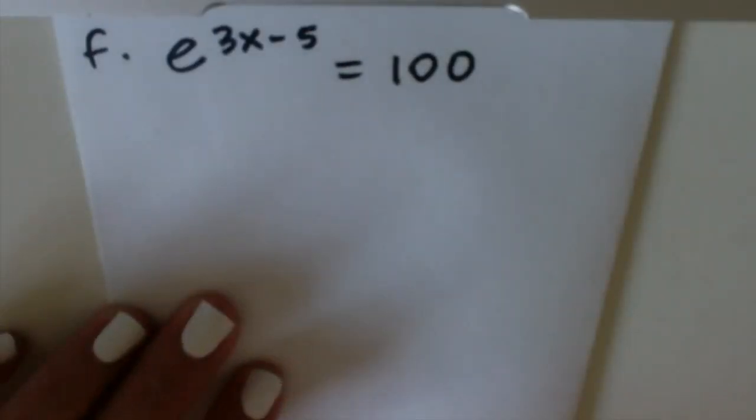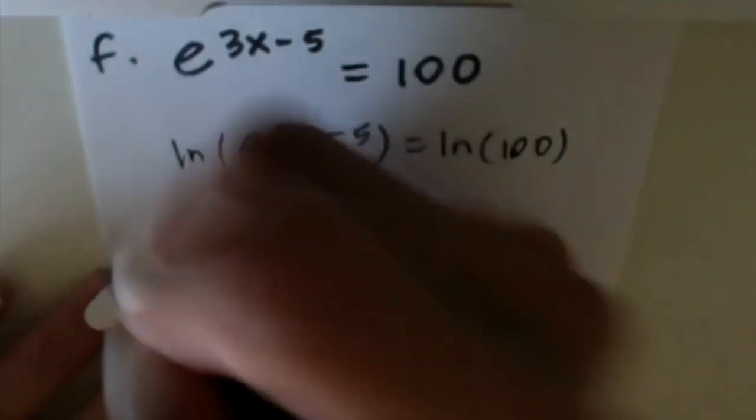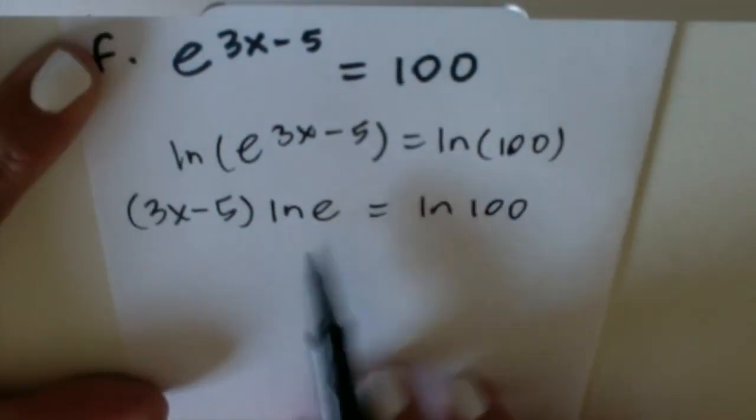Our last example is e^(3x-5) = 100. So we'll just take the natural log of both sides. You're going to bring the entire power to the front. ln(e) = 1.